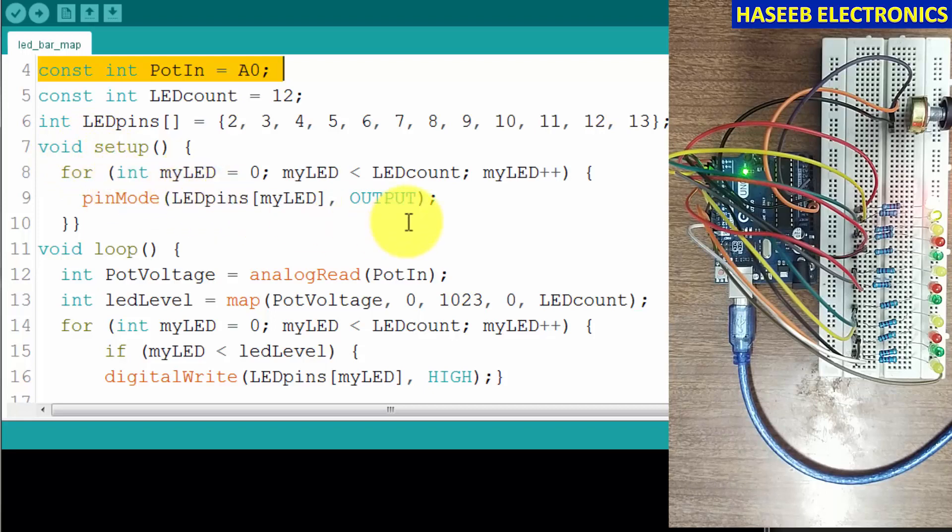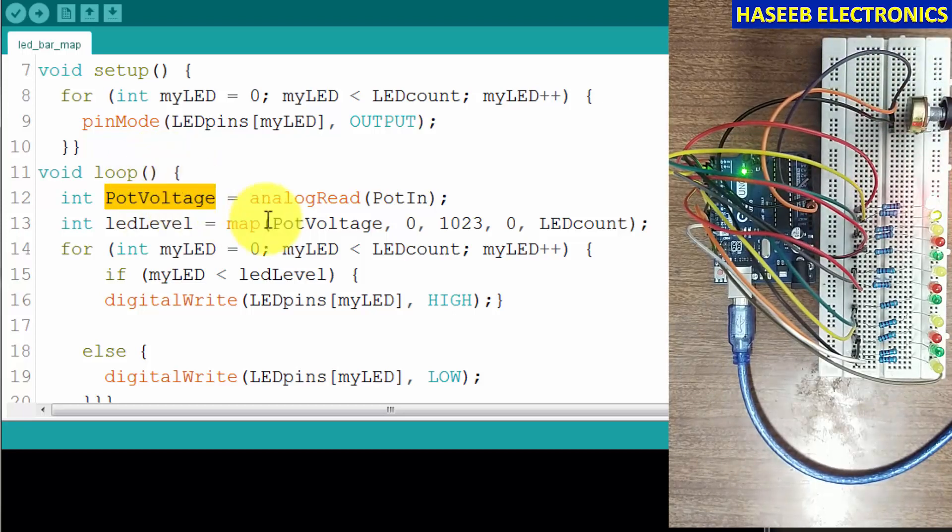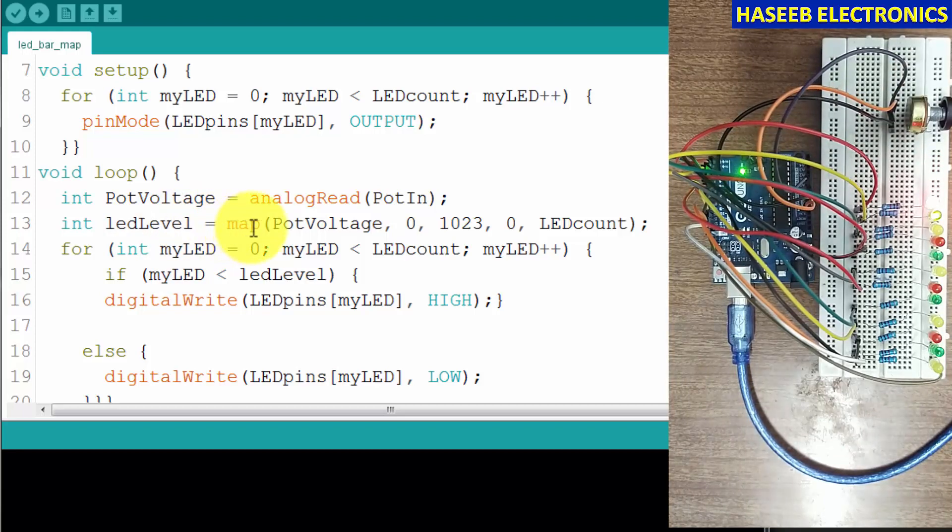Now in the loop, int potentiometerValue - we assigned a name to read the potentiometer voltage which is here analogRead(PotIn). Int ledLevel - we will calculate the present position of the level. ledLevel equals map - it will map the potentiometer voltage which it measured here, and the total number of steps are 0 to 1023 and 0 to LEDcount. LEDcount is 12, so it will divide these steps into these LED numbers, and then it will decide how much is the value there. It will distribute to each LED.